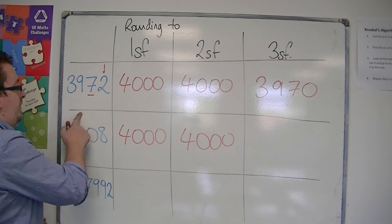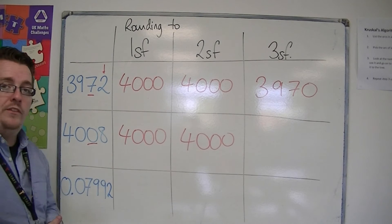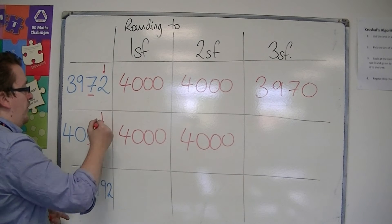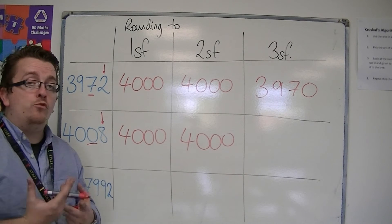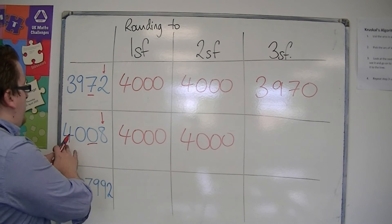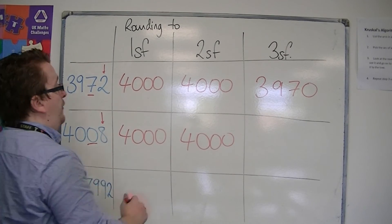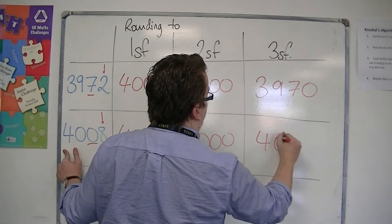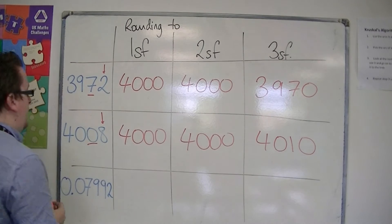To three significant figures, that's the third significant figure column, one to the right. Now the eight tells me to round up. So instead of it being 4,000, it is closer to 4,010. Okay, so I round it up.